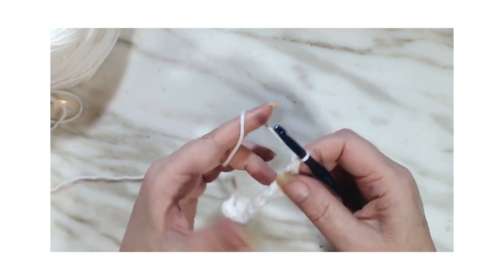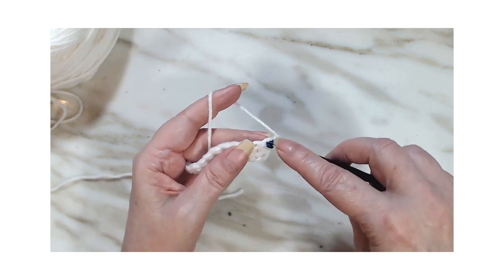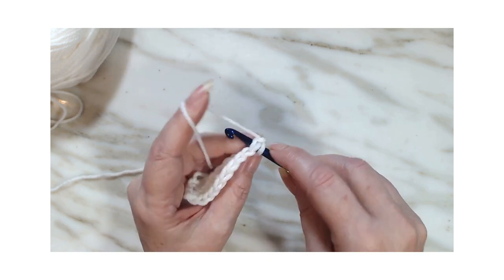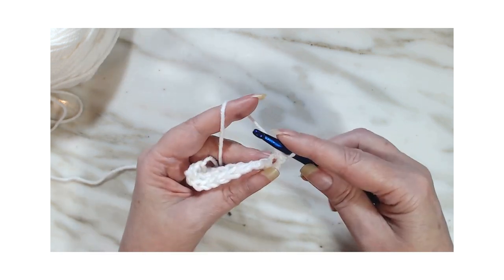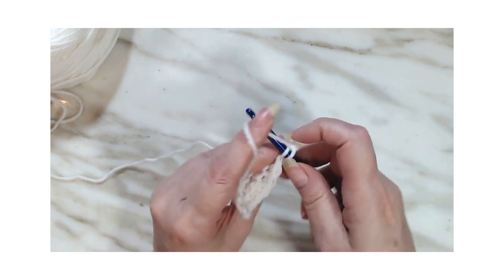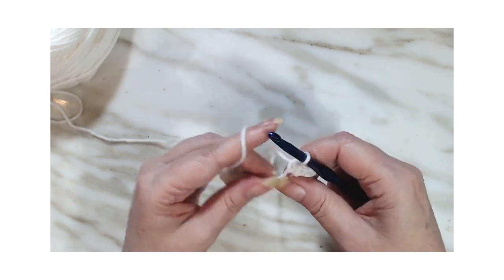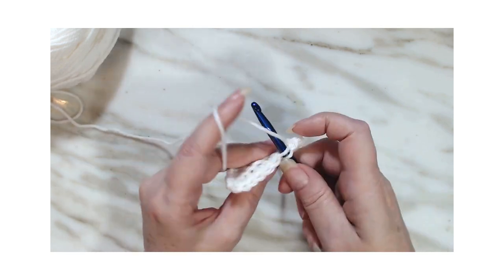Chain one, turn away from us, go back down in there, go through two loops, two legs, and make a single crochet. Back stitch in the next eight. And in the 10th one, we're going to go through both loops.